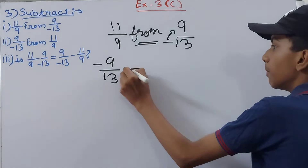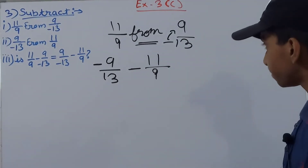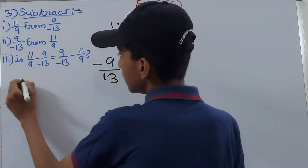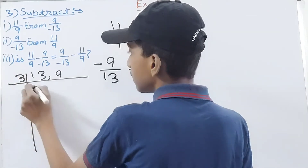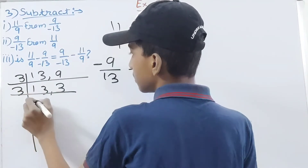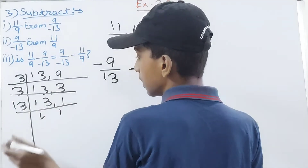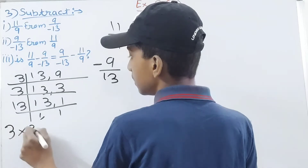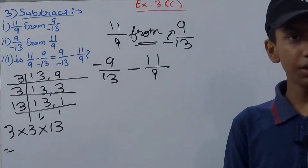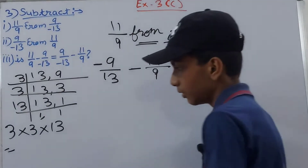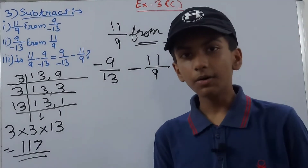Now we find the LCM of 13 and 9. Breaking them down: 3 × 3 = 9, and 13 is prime. So LCM = 3 × 3 × 13 = 9 × 13 = 117. So 117 is our LCM.